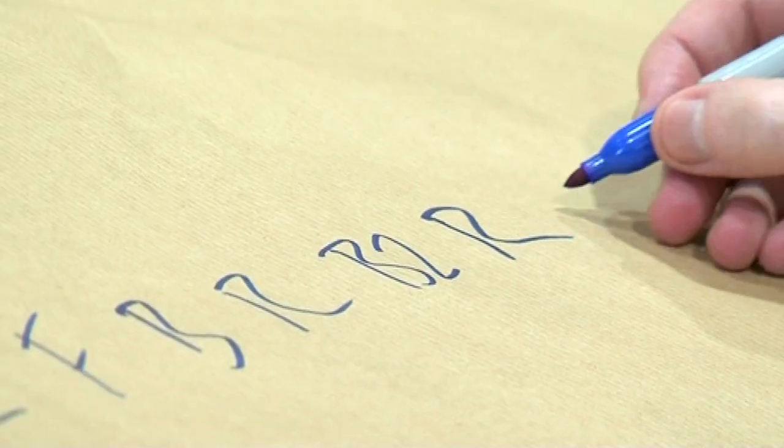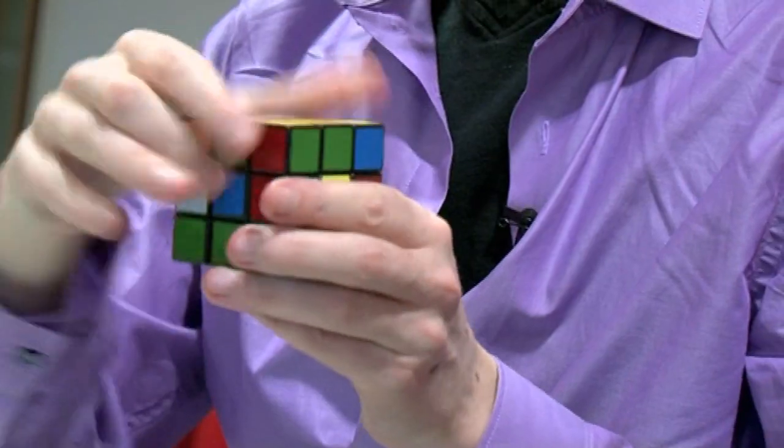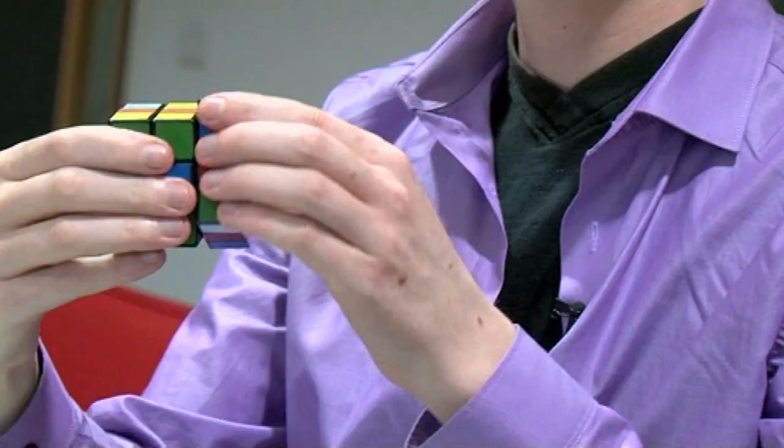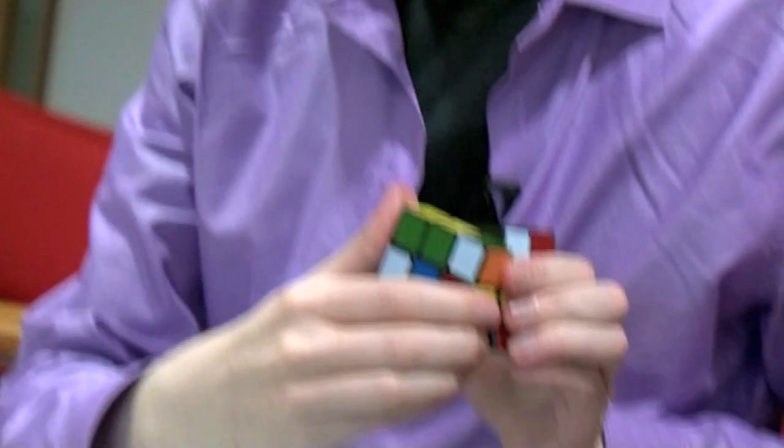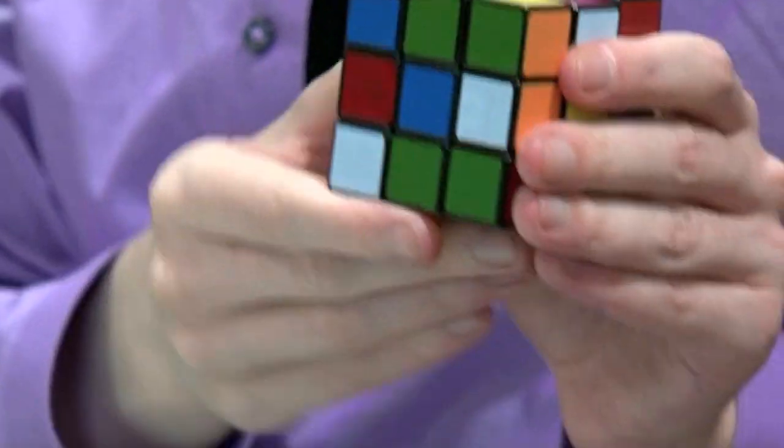Right. Up twice - one, two. Left. Back twice - one, two. Right, right.